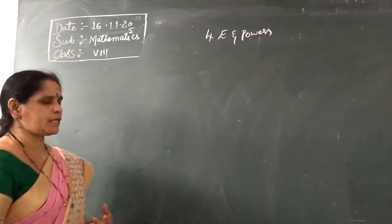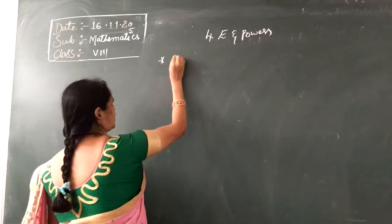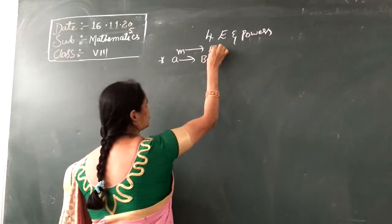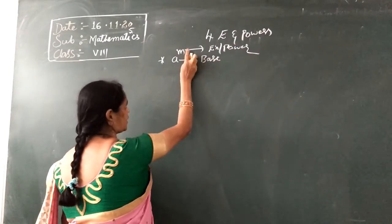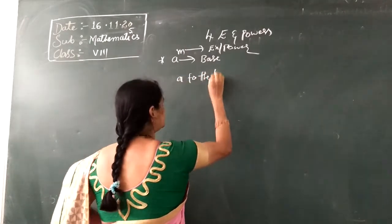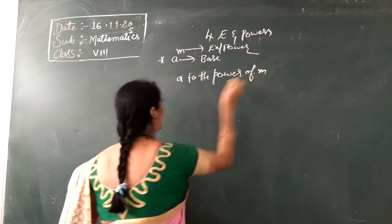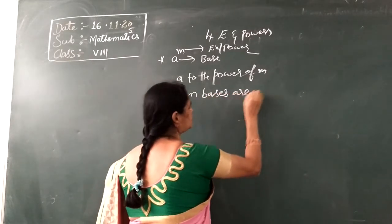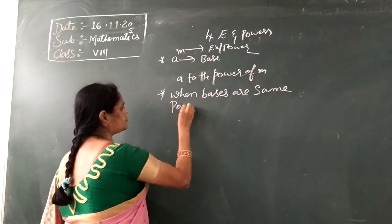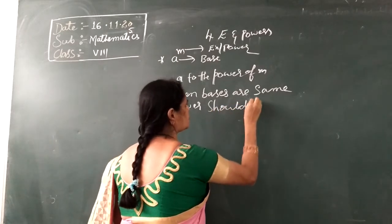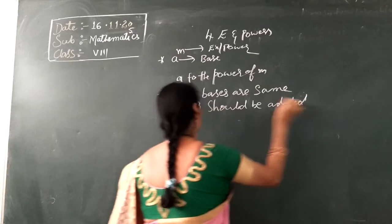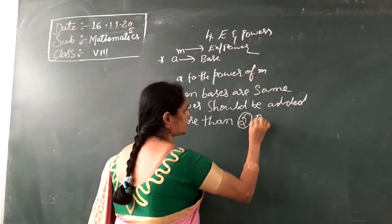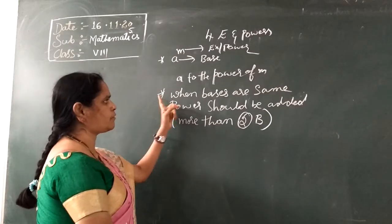Previously I introduced base, exponent, and power. In A to the power of M, A is called the base and M is called the exponent or power. One formula is: when bases are same, powers should be added. This applies when you observe more than two bases with the same base.